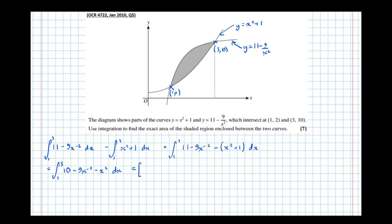Okay, so integrating that, we get 10x minus 9 x to the minus 1, so add 1 to the power, divide by the new power, which is minus 1, which turns that minus into a plus. Then take x cubed over 3, and the two limits are 3 and 1.